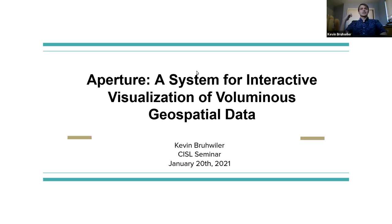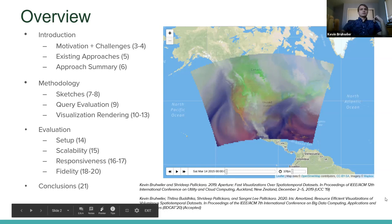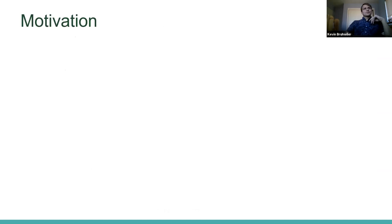Thank you for the introduction. I'm going to be talking about Aperture, the system from my master's work — it's for remote geospatial data visualization, meaning it lets you visualize large amounts of geospatial data stored on a cluster of machines rather than your personal computer. The end product looks like the image on the right, visualizing three features from the NOAA North American Mesoscale dataset: temperature, precipitable water, and relative humidity. This material is drawn from two papers listed at the bottom if you want more detail.